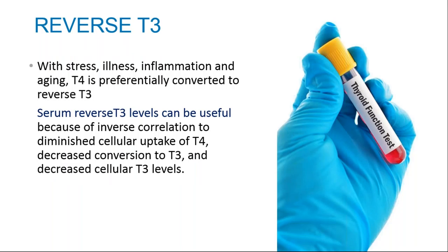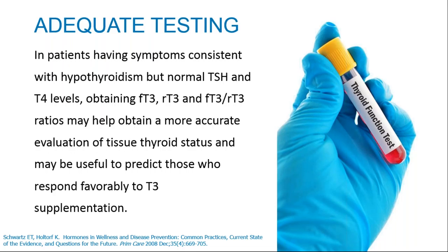Regarding reverse T3: T4 is normally converted to both reverse T3 and T3 in roughly equal parts, but under certain conditions — stress, illness, inflammation, poor nutrition — more reverse T3 is made. Reverse T3 works from the same receptor as T3 but has only one-hundredth the activity, so it acts as a blocker of T3 at the T3 receptor. There is an inverse correlation: when reverse T3 goes up, cellular T3 goes down. I do use reverse T3 sometimes, and I'll explain why I don't use it as much anymore.